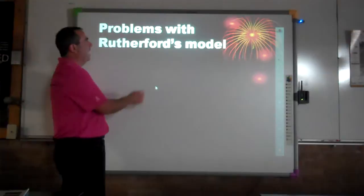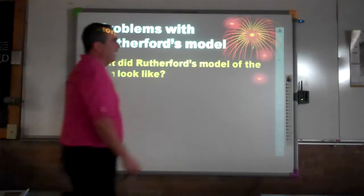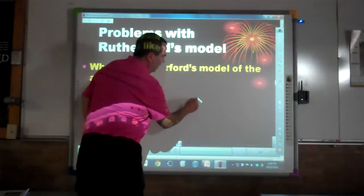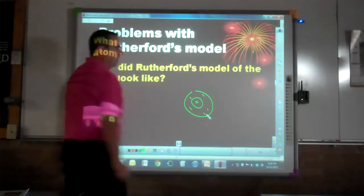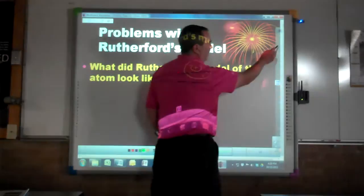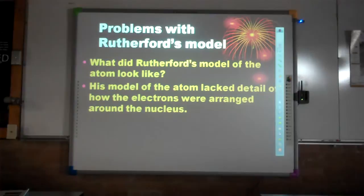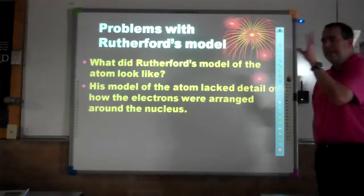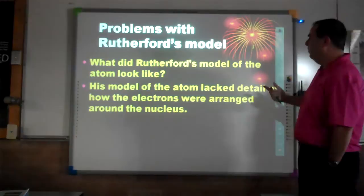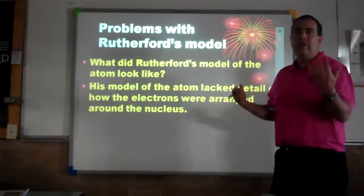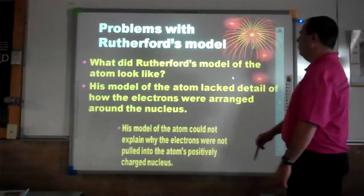If you remember Rutherford's model of the atom, his model had the nucleus in the center with electrons on the outside. The problem with his model was it lacked detail of how the electrons were arranged. Specifically, where are they around that nucleus? Are they all in one ring? We know there are seven rings now. Were they moving three-dimensionally or two-dimensionally? His model lacked a lot of detail about those electrons.